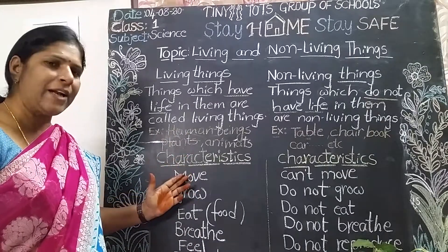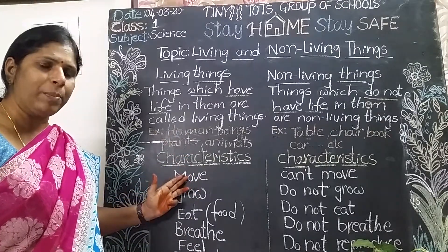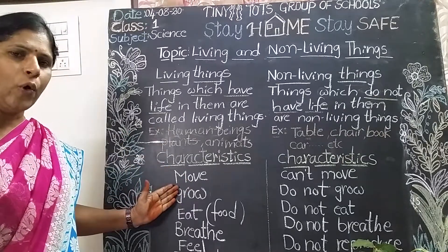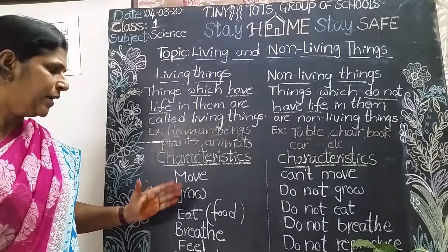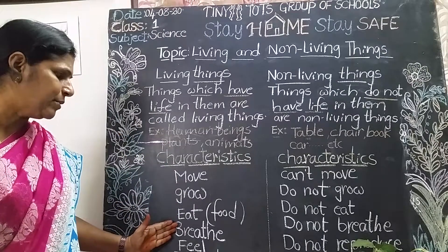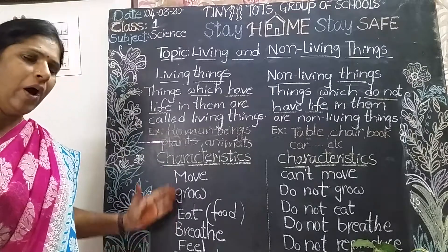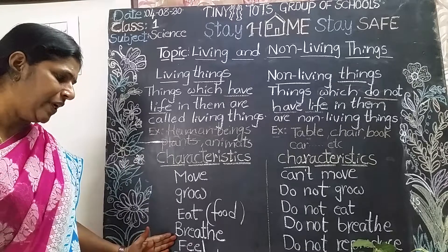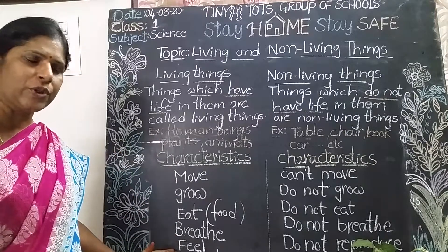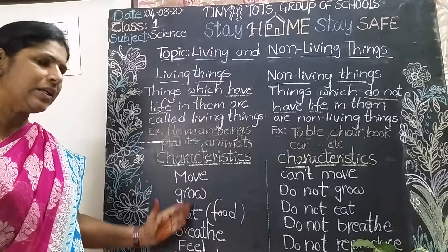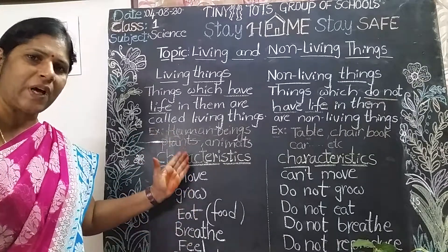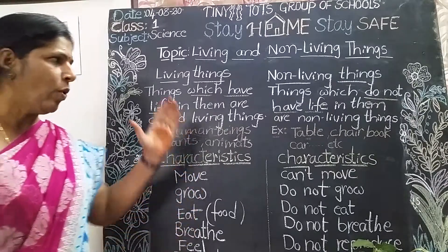These are the important characteristic features of living things: All living things can move from one place to another. All living things can grow, grow old, and die. All living things need food. All living things breathe. All living things can feel. All living things can reproduce.